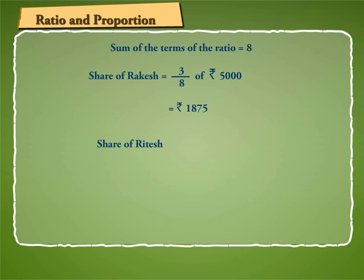share of Ritesh is equal to 5 by 8 of rupees 5000 which is equal to rupees 3125.